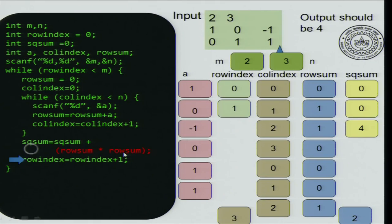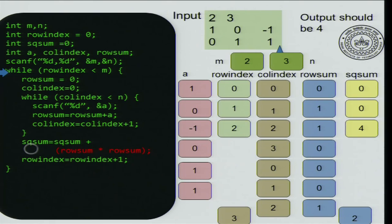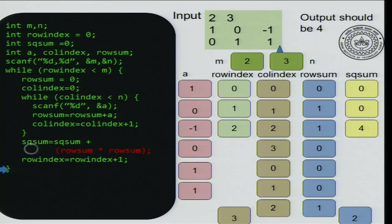After that, increment row index and row index becomes 2, which is not less than m, so we exit the loop. We have correctly computed the sum that we wanted, which is 4.